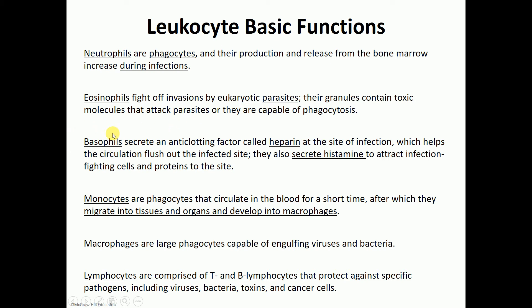Basophils are increased especially in allergies. Their granules contain a chemical known as heparin, which is a blood thinner, and other granules store histamine, which leads to vasodilation of blood vessels — experienced during inflammation or an allergic reaction. So basophils store heparin and histamine. Monocytes, as mentioned before, are phagocytic cells that leave the bloodstream to become macrophages in the tissue.